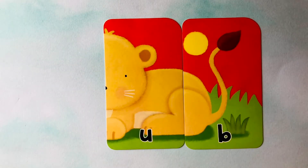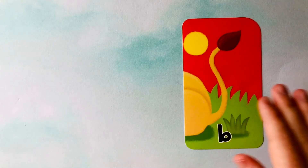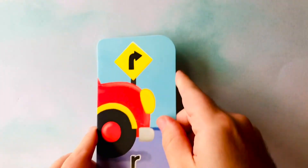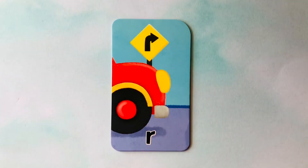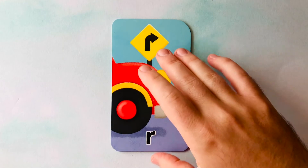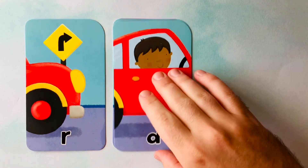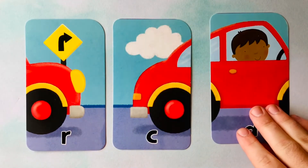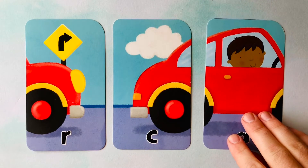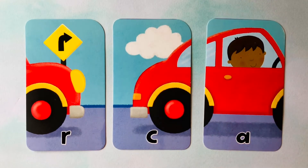Goodbye, C. See you later, U. After a while, B. Let's do one last word. All right. Looks like we're starting with an R. And we have an A and looks like a C. I think I know exactly what this picture is. I see these all the time. I think it's a car.